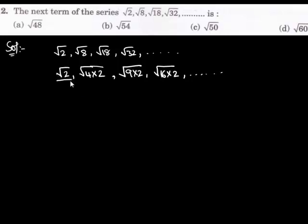Except the first term, factors of other terms consist of a perfect square: 4, 9, and 16. So we can rewrite the given series as root 2, 2 root 2, 3 root 2, 4 root 2, and so on.